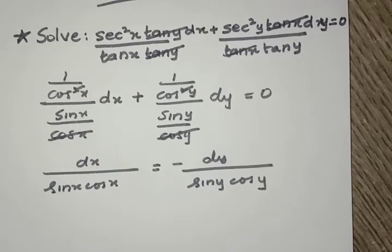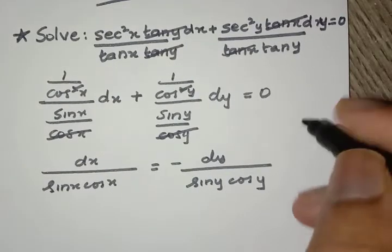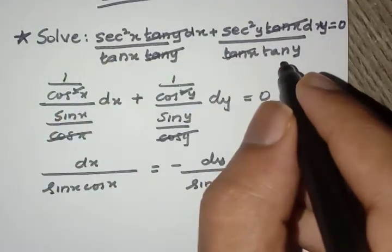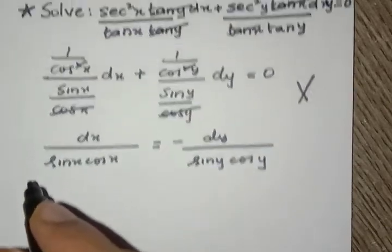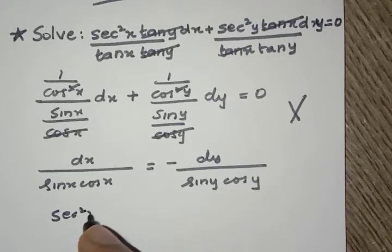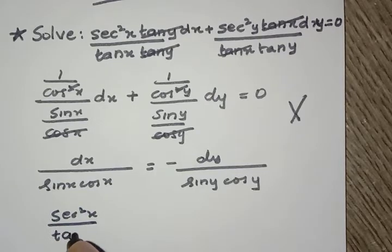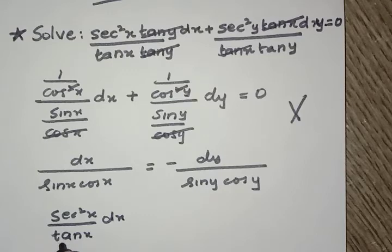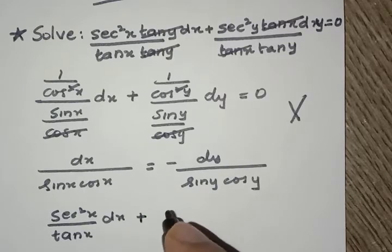Actually, we didn't have to go till here, so this was a wrong method. We could have easily found our answer from here because sec²x by tan x dx is the form of f dash of x by f of x, so we can easily integrate this. I didn't see that, sorry.